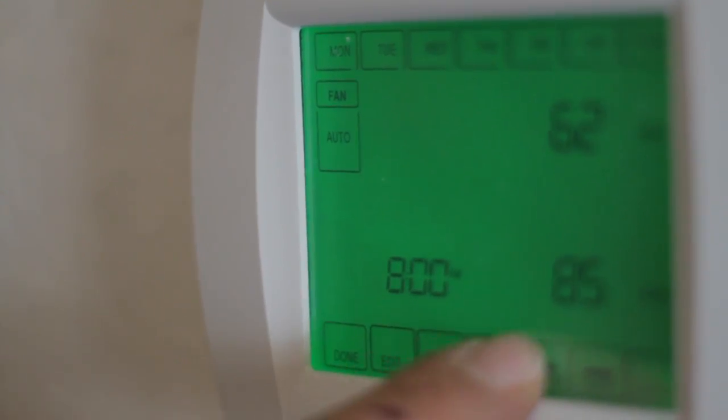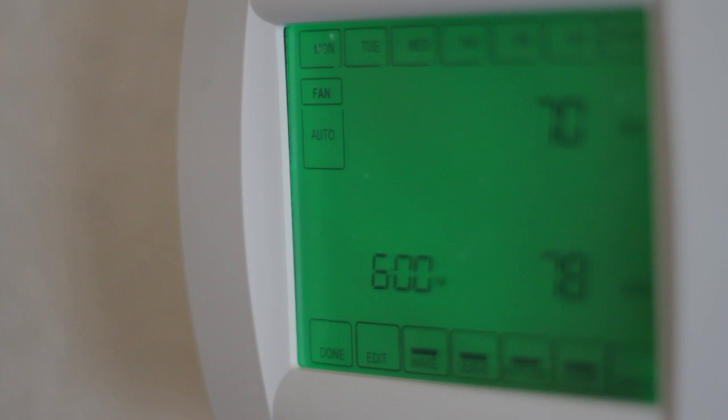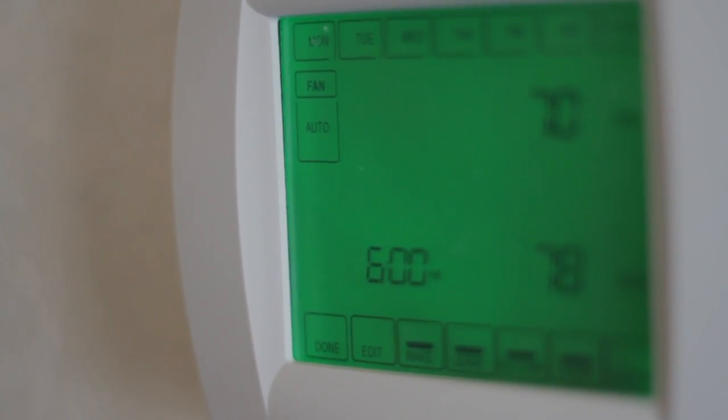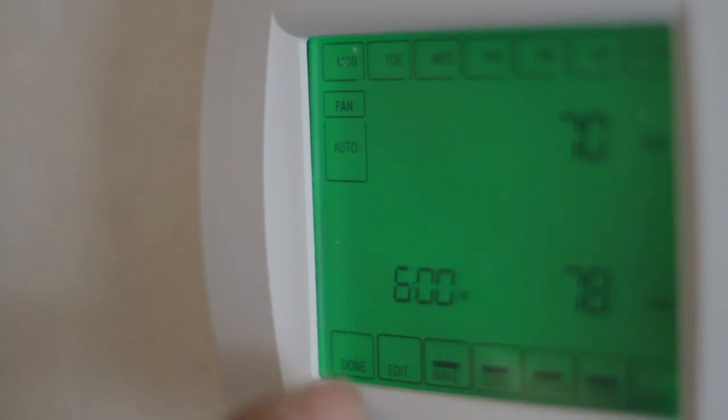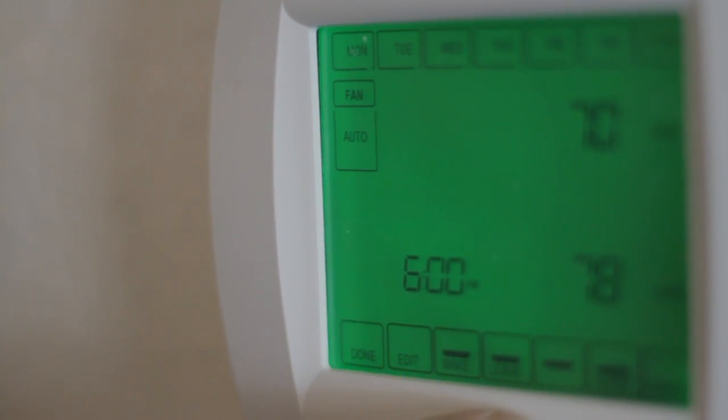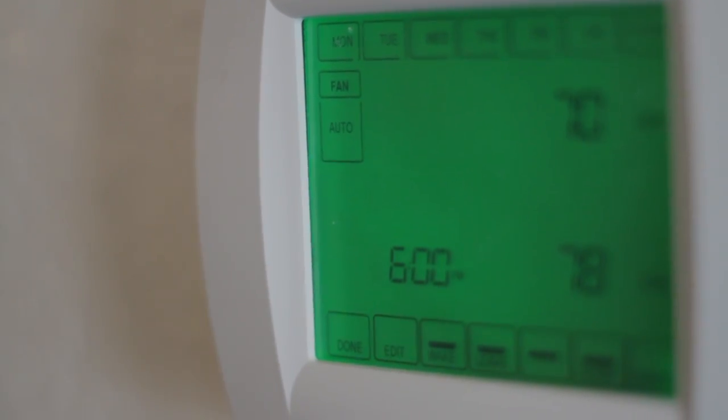You can do the same thing with the cooling. Return time is the next setting, so basically that would be the time that you would return home from work. It's going probably about an hour before anybody gets home from work to start warming the house back up. This one's set at 70 degrees, 78 for the cooling.